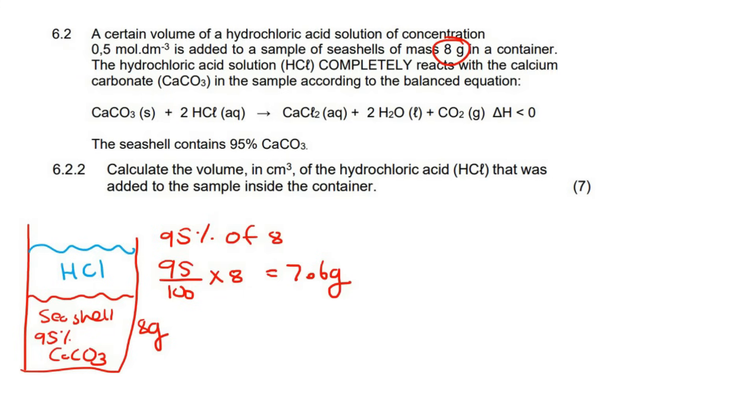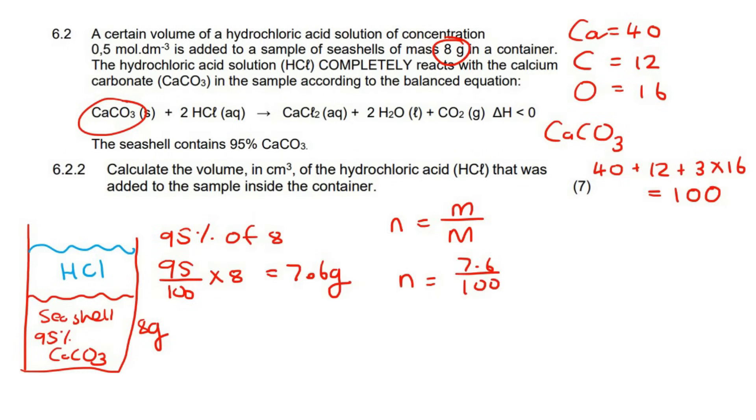We are going to say n equals to M over M. So we can get the moles of CaCO3. Now we need a periodic table. Calcium on the periodic table is 40, carbon is 12, oxygen is 16. So if you want to get the molar mass of CaCO3, it's going to be 40 plus 12 plus 3 times 16, and that would be 100. So we could say the moles is going to be 7.6 over 100, and that would end up being 0.076, and that is calcium carbonate.